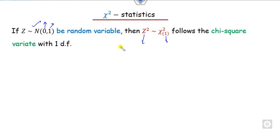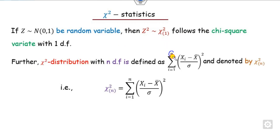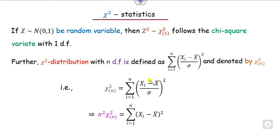If you want to extend this to n variables with n degrees of freedom, you can write it as shown here. Note that since sigma is independent of the index i, we can take it outside and write it this way.